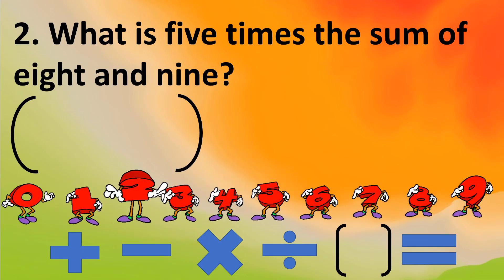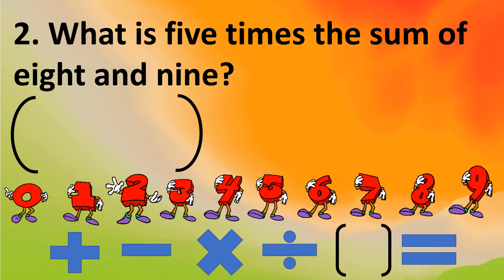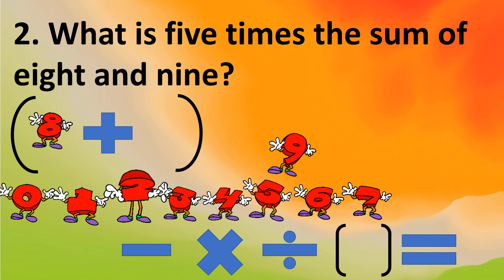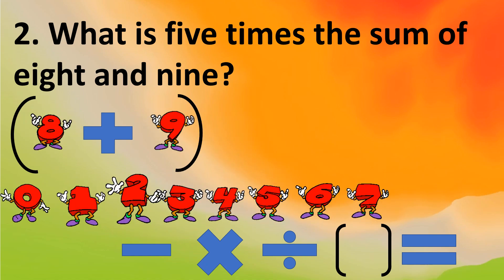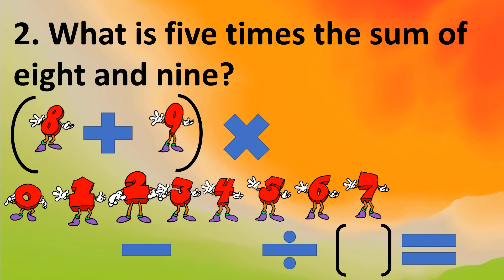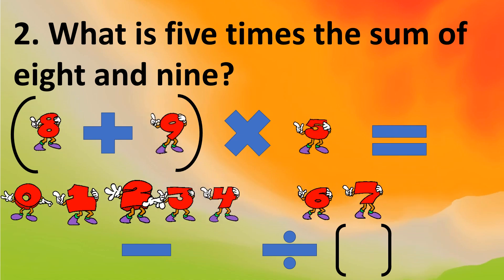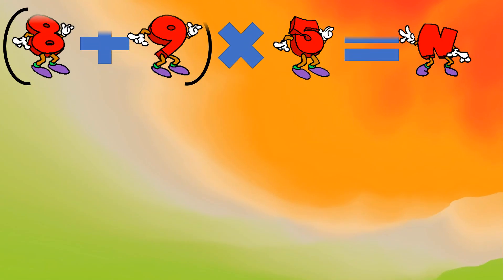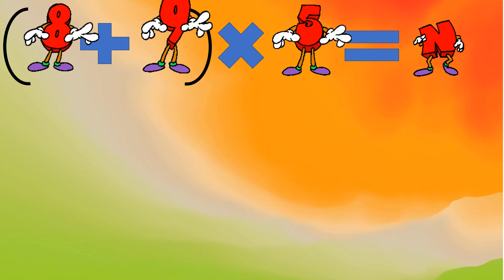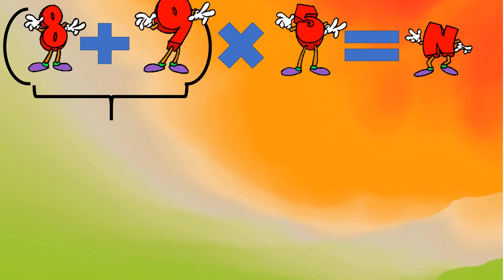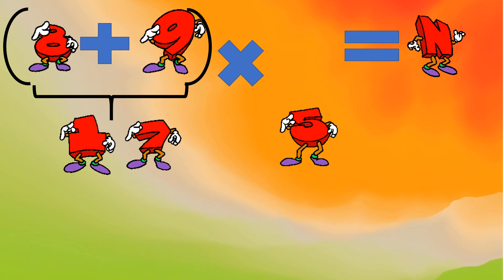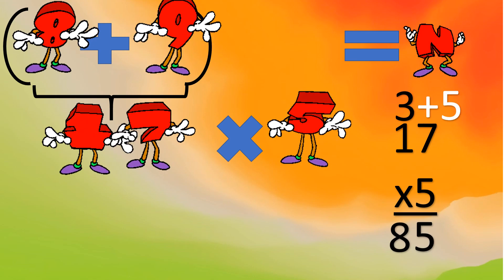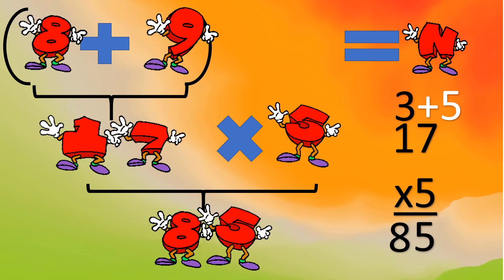Let's try number 2: What is 5 times the sum of 8 and 9? First, write the sum of 8 and 9 in parentheses: (8 + 9). Then 5 times that equals N. To solve: 8 plus 9 is 17, then bring down the remaining operation — 17 times 5 is 85. So N is 85.